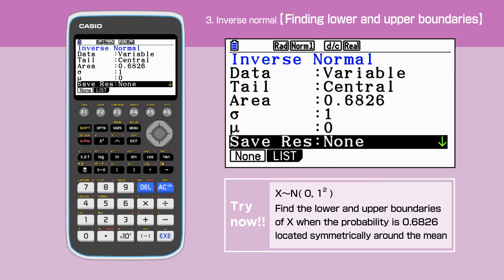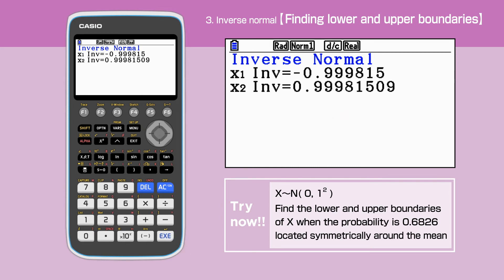Press Execute to work out the value. The lower value of X is minus 1 and upper is 1.